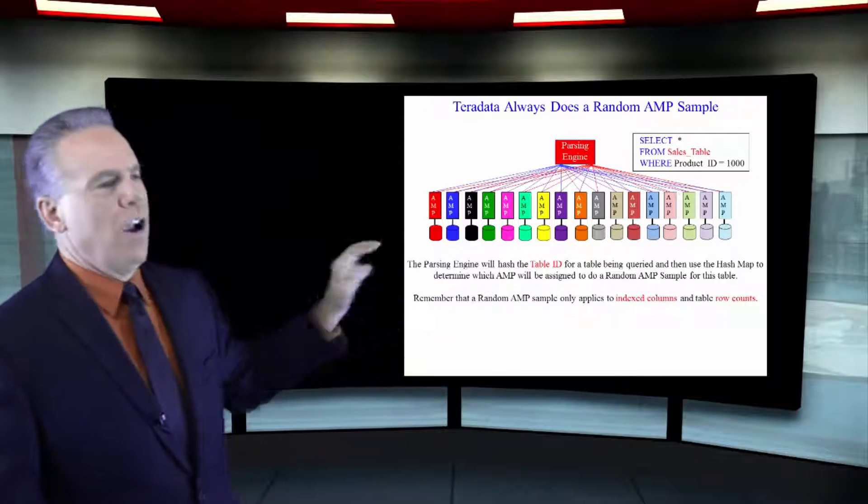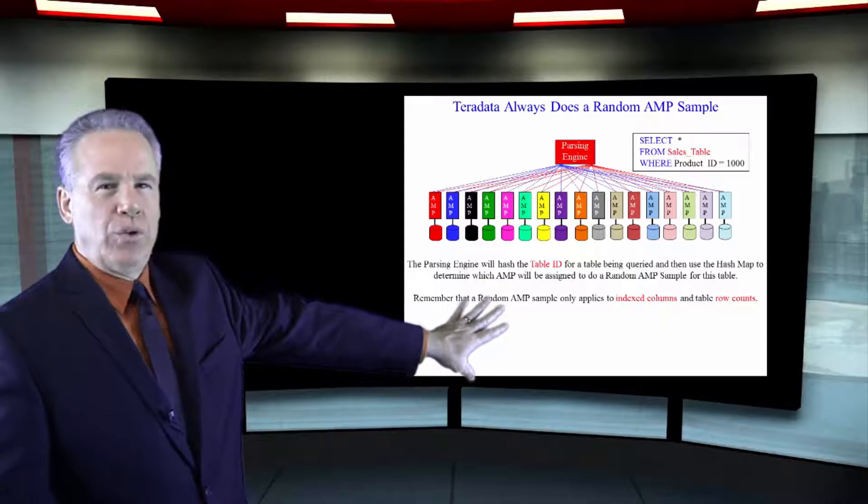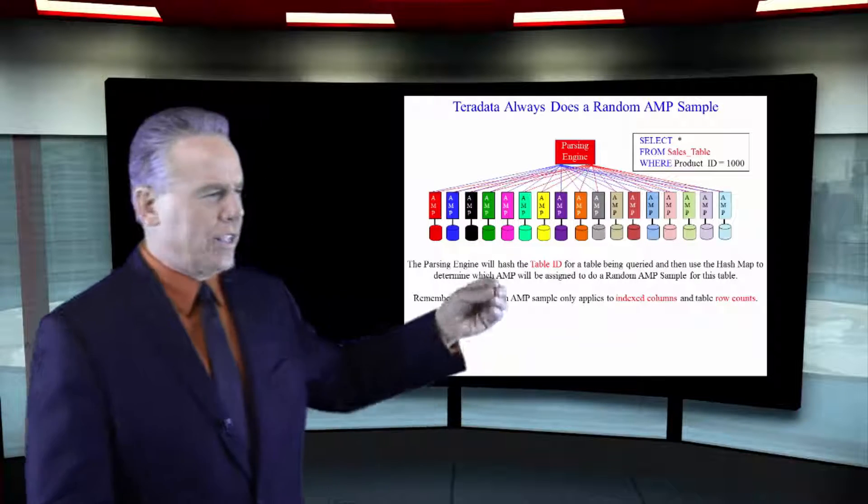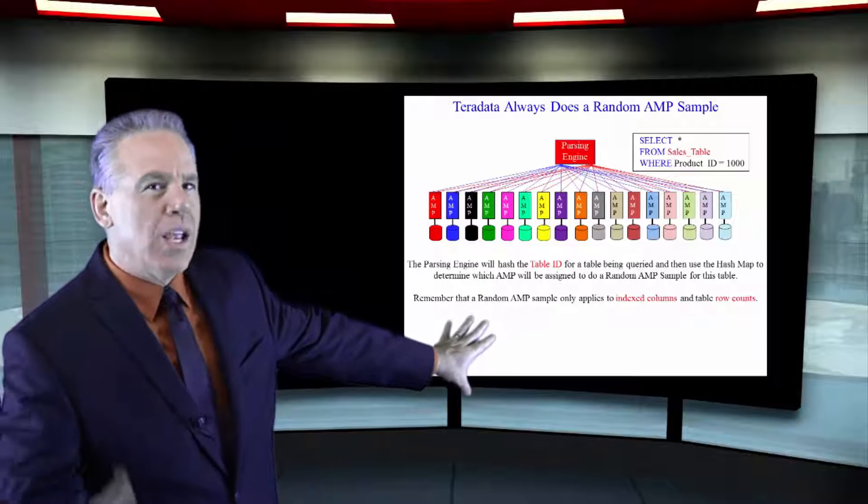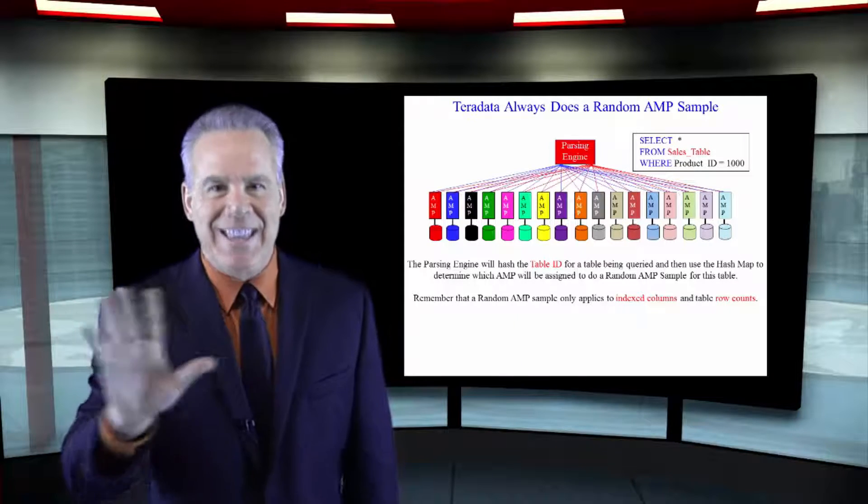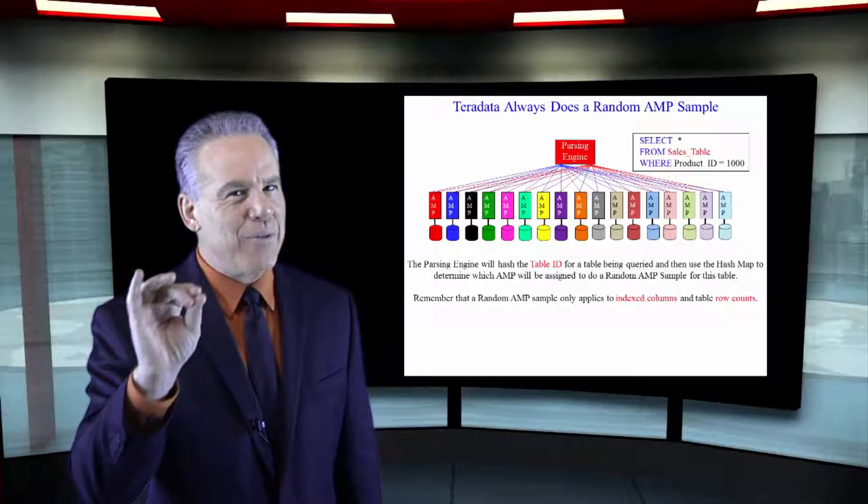Select everything from the sales table where the product ID is equal to 1000. The parsing engine would say, did we collect statistics on the sales table? If the answer was yes, it would just trust those statistics to the end. Sometimes that was a problem.